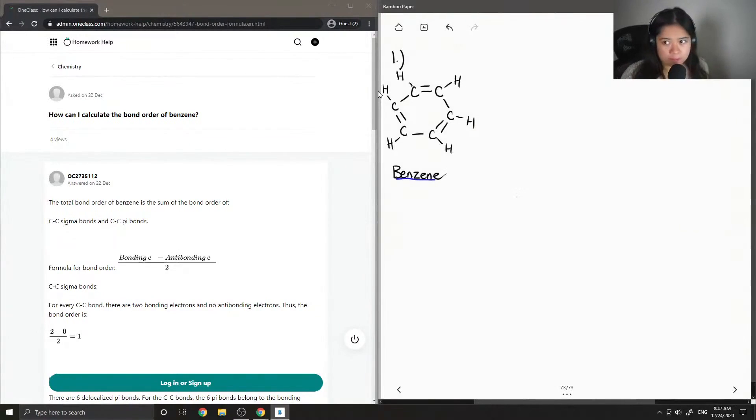Okay, so now I'll write down the formula to find bonding order. This is equal to the bonding electrons minus the antibonding electrons all over two.